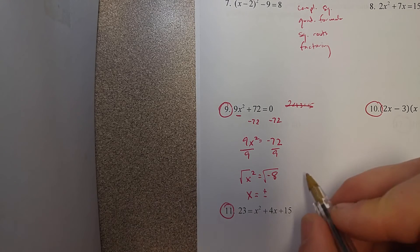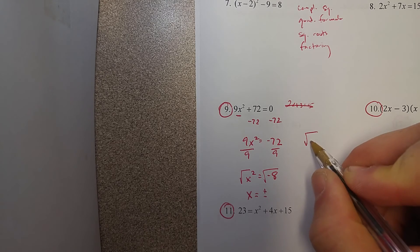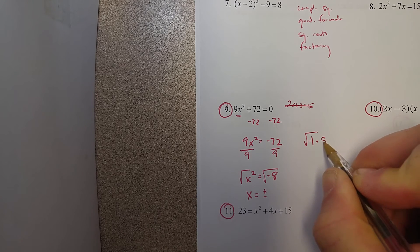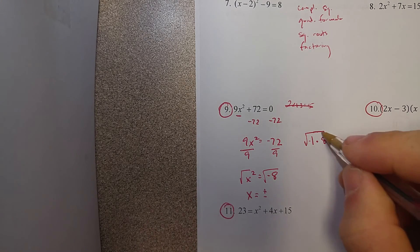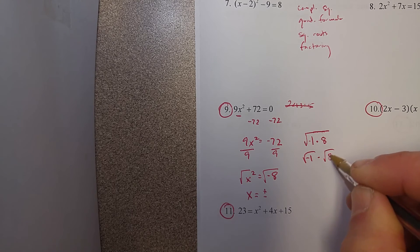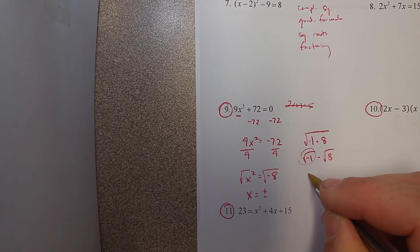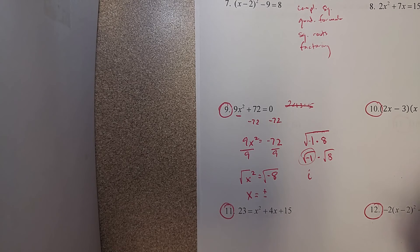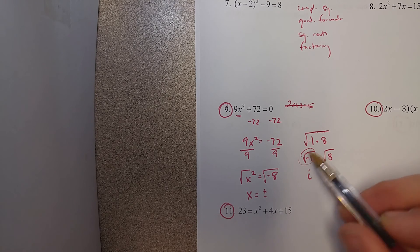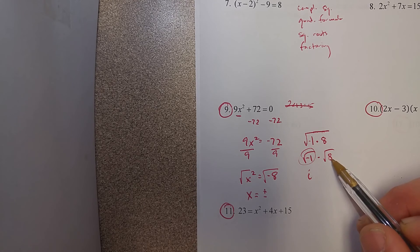There's a negative, so I can rewrite the square root of negative 8 as the square root of negative 1 times 8. The square root of negative 1 is the imaginary number i. So we call this i, and we still have the square root of 8.